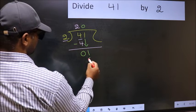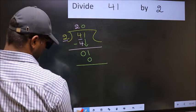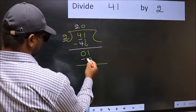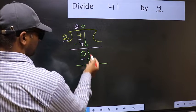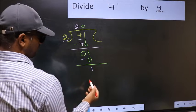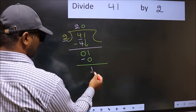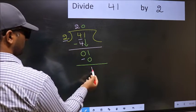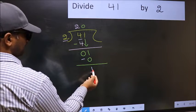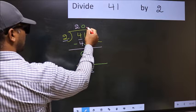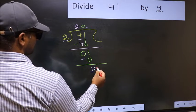So 2 into 0, 0. Now you subtract. 1 minus 0, 1. Over here, we don't have any numbers to bring it down. And here we have 1, here 2. 1 is smaller than 2. Over here, we did not bring any number down. So now you can put a dot and take 0 here.